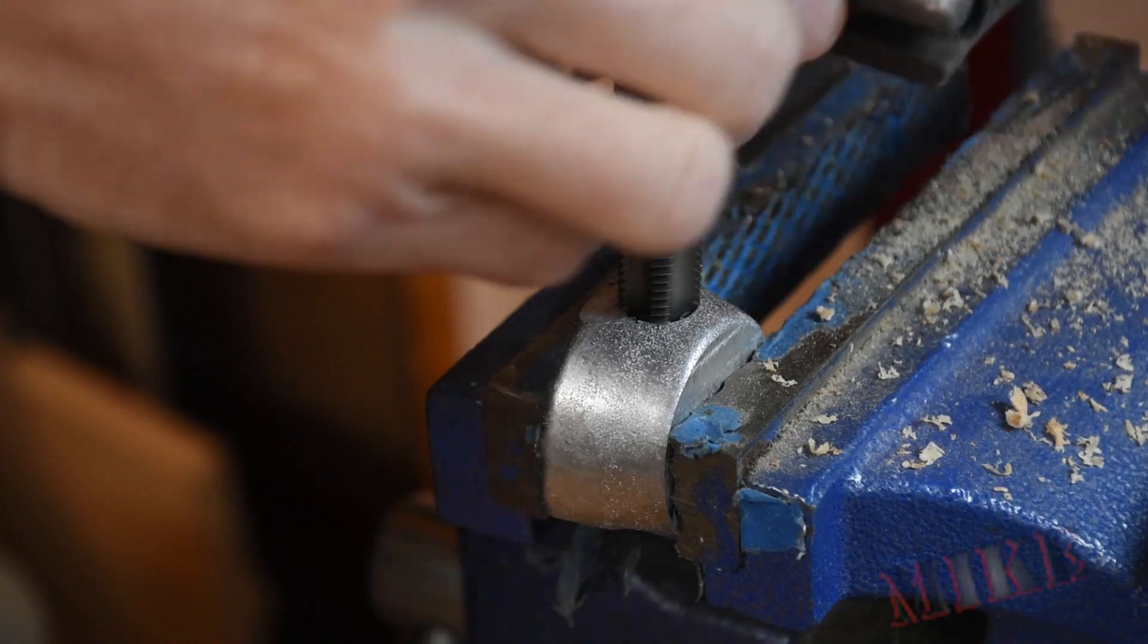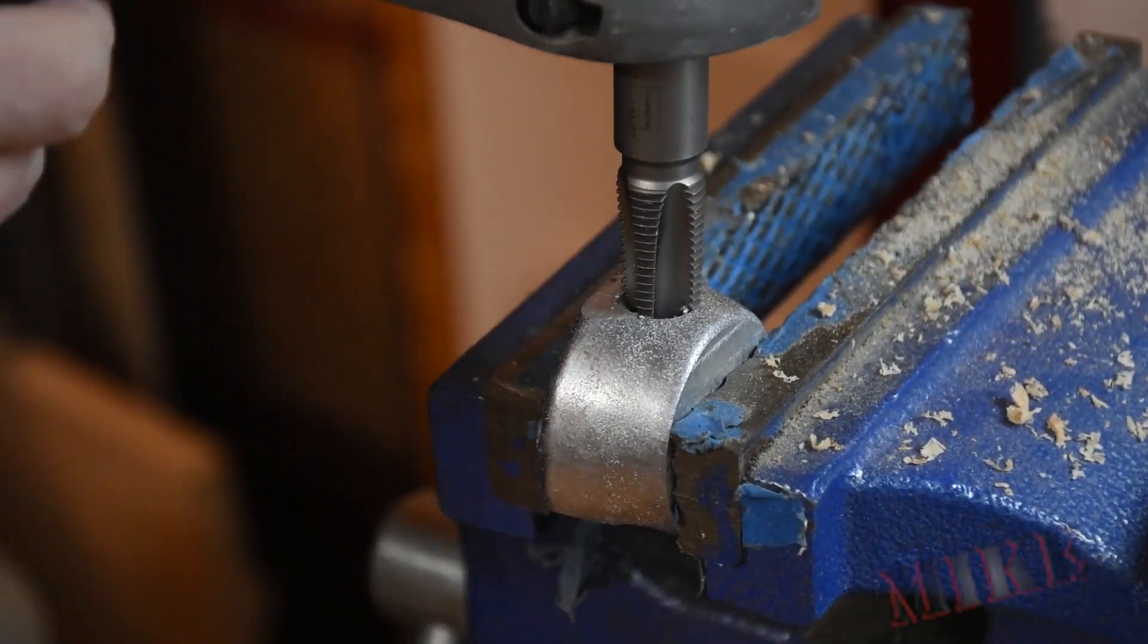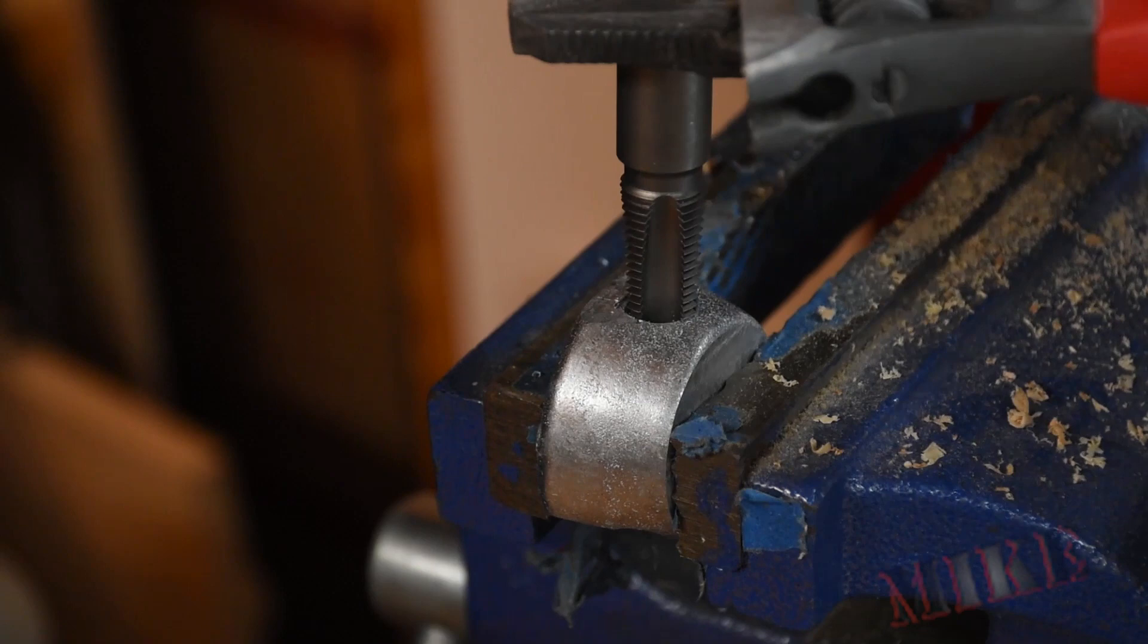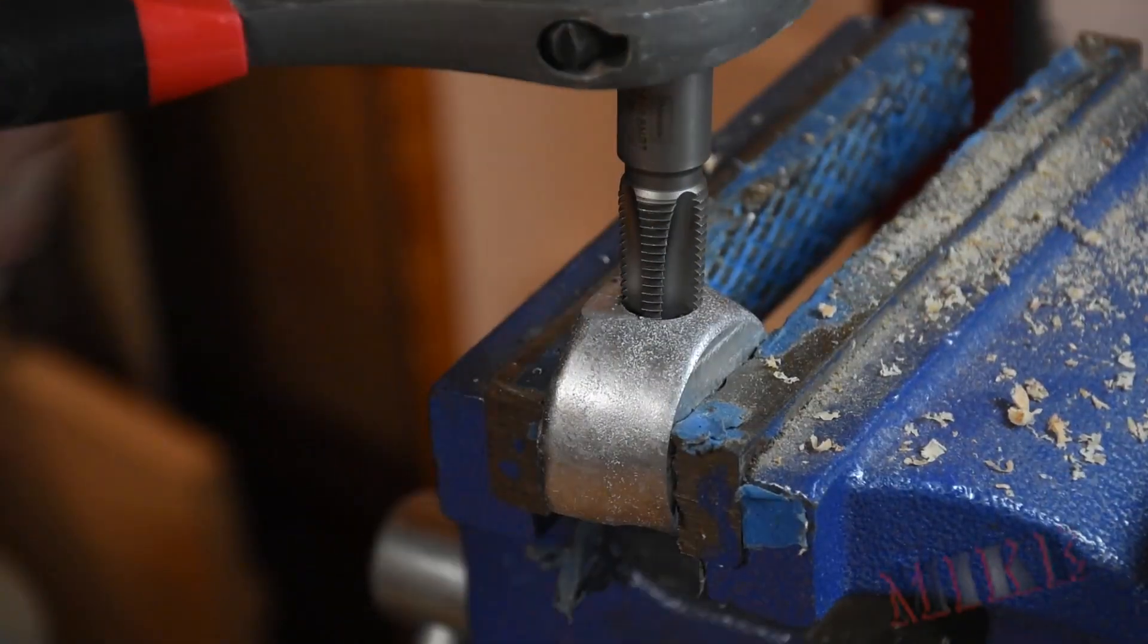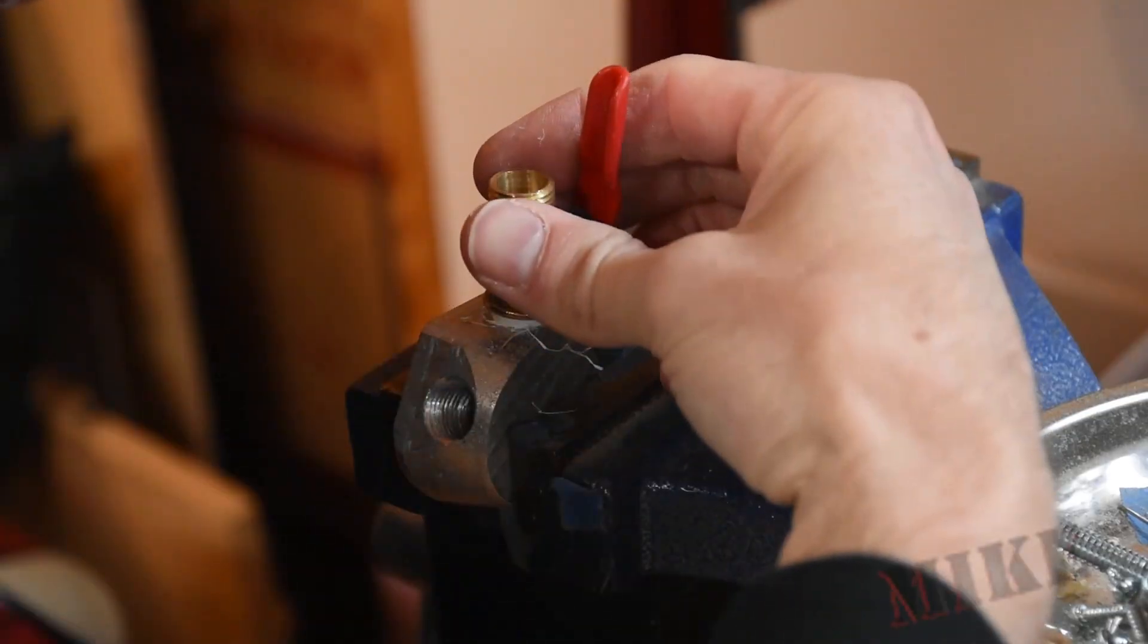Now I didn't have a tap wrench for this size of tap so I had to ad-lib here with my regular wrench and it worked just fine. And like I said this is just a quarter inch NPT, not very deep either.